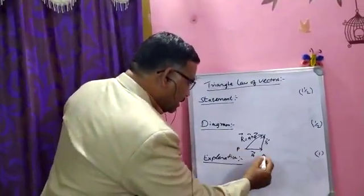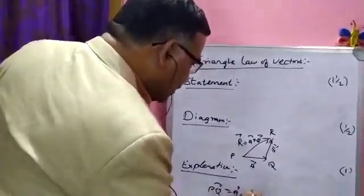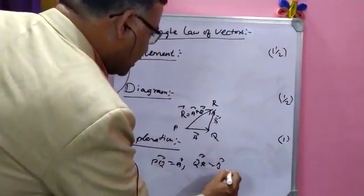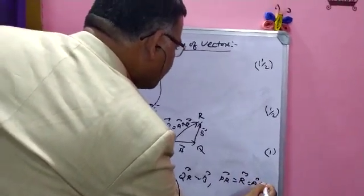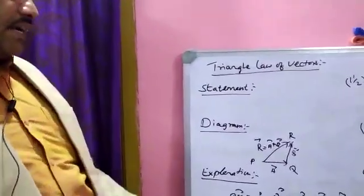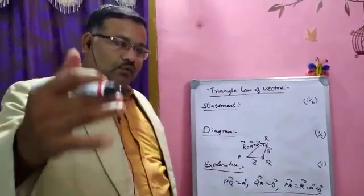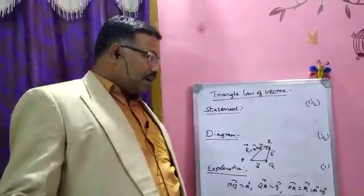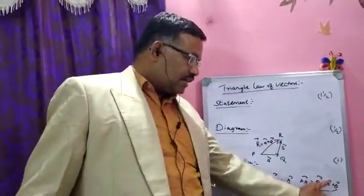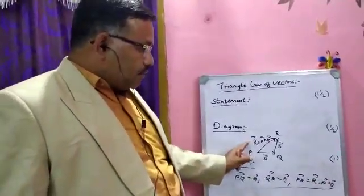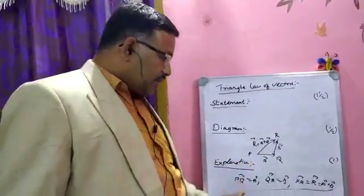For the explanation, suppose you give the name triangle PQR. The vector PQ represents vector A, the vector QR represents vector B, and the vector PR represents the resultant vector R, that means A plus B. So if the two sides PQ and QR are represented in one order, the resultant is represented by the third side PR. PR is called the resultant. What you have understood from the diagram, that you have to write in the explanation.